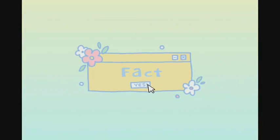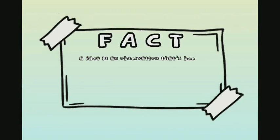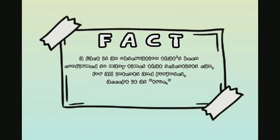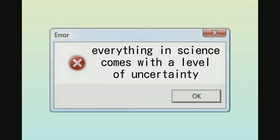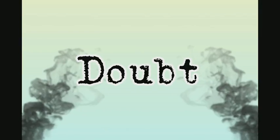This one is pretty straightforward, but there's a caveat. In science, a fact is an observation that's been confirmed so many times that scientists can, for all intents and purposes, accept it as true. But everything in science comes with a level of uncertainty, so nothing is ever scientifically true beyond a shadow of doubt.